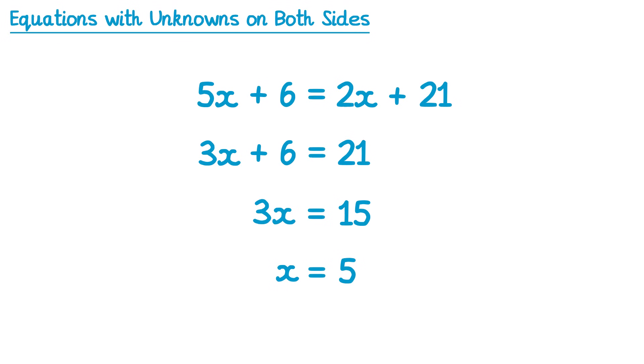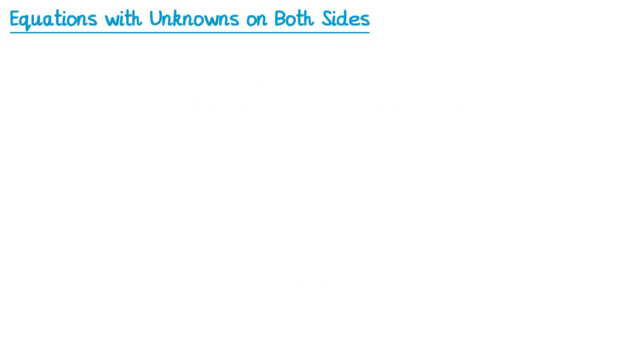So after we do that first step where we eliminate the 2x from the right-hand side, it just turns into a two-step equation. Let's have a look at another example.